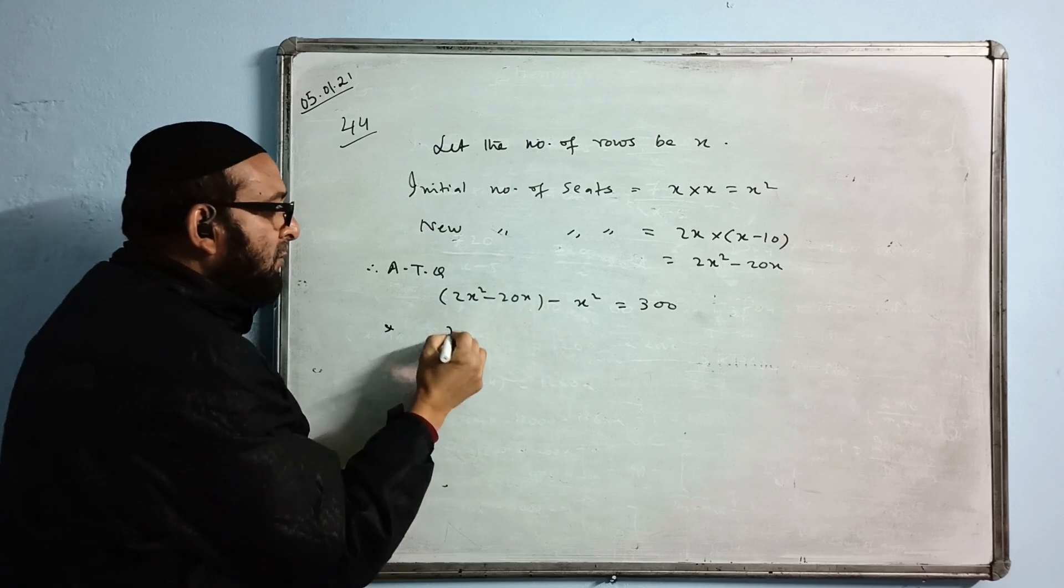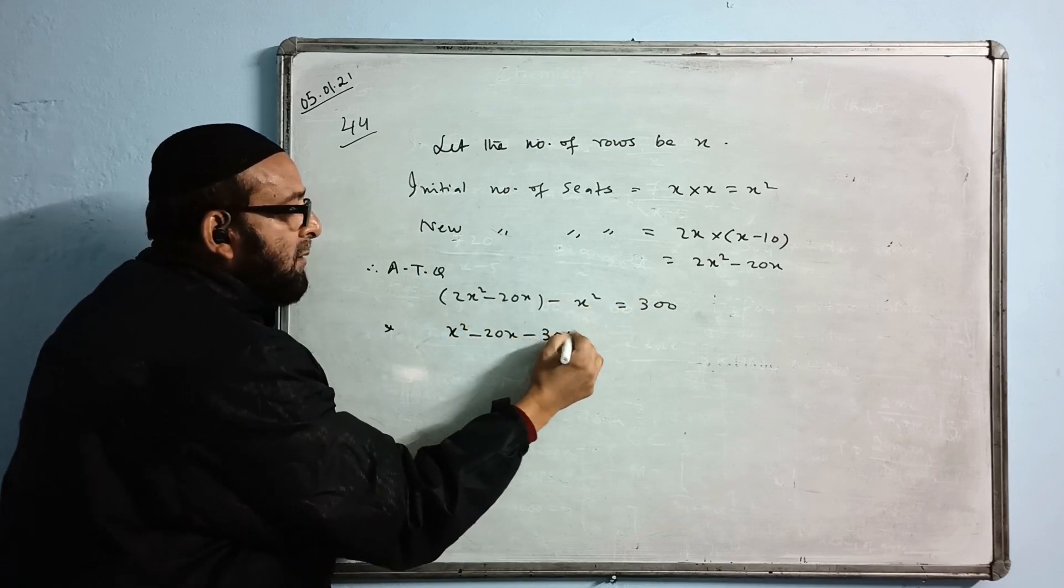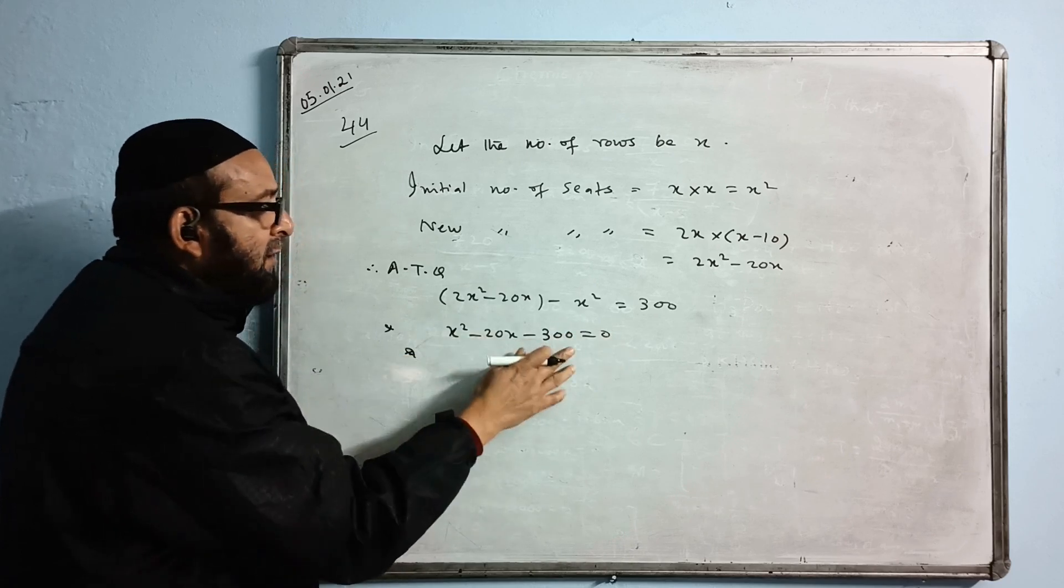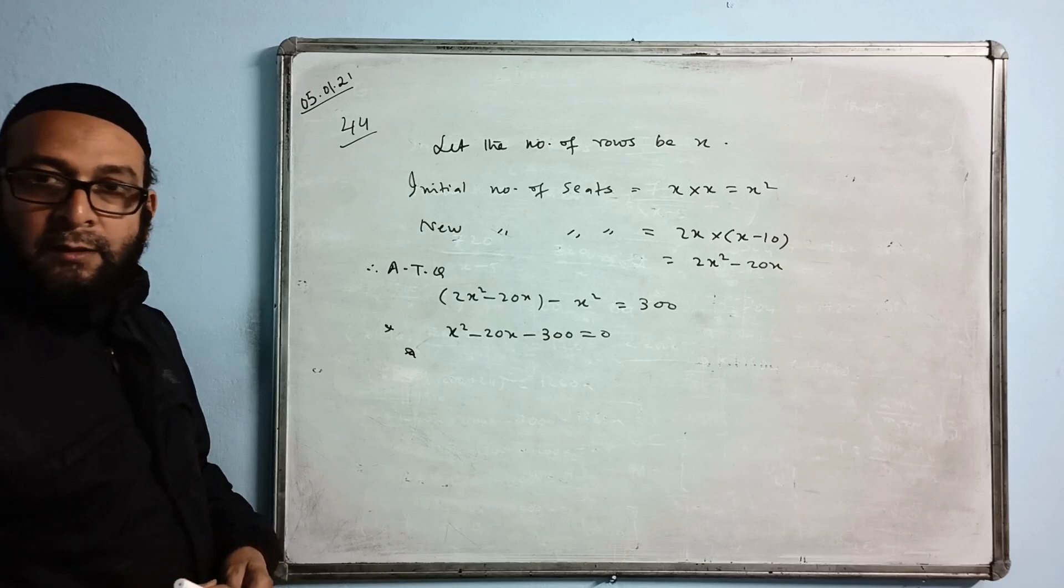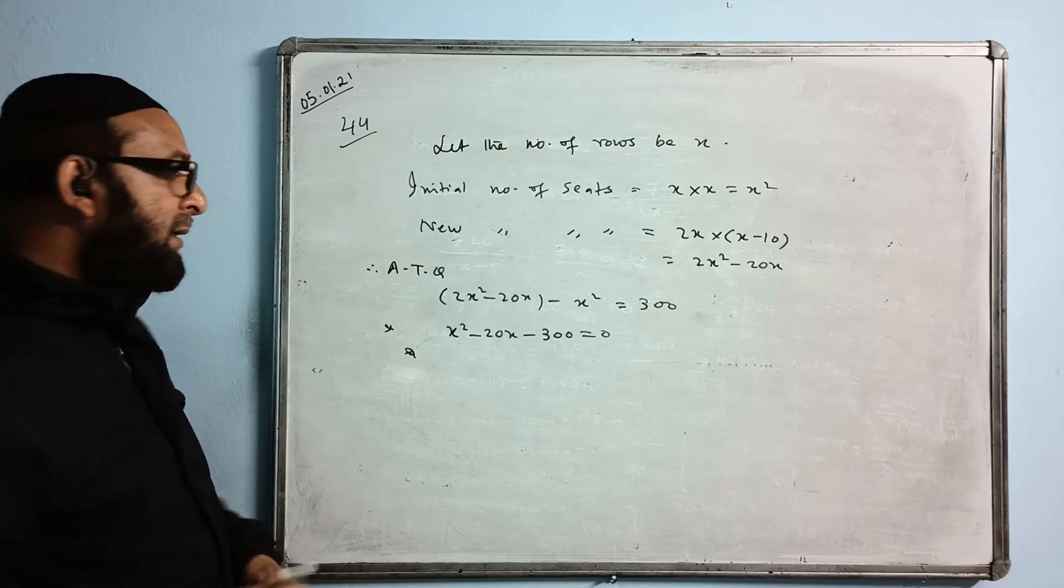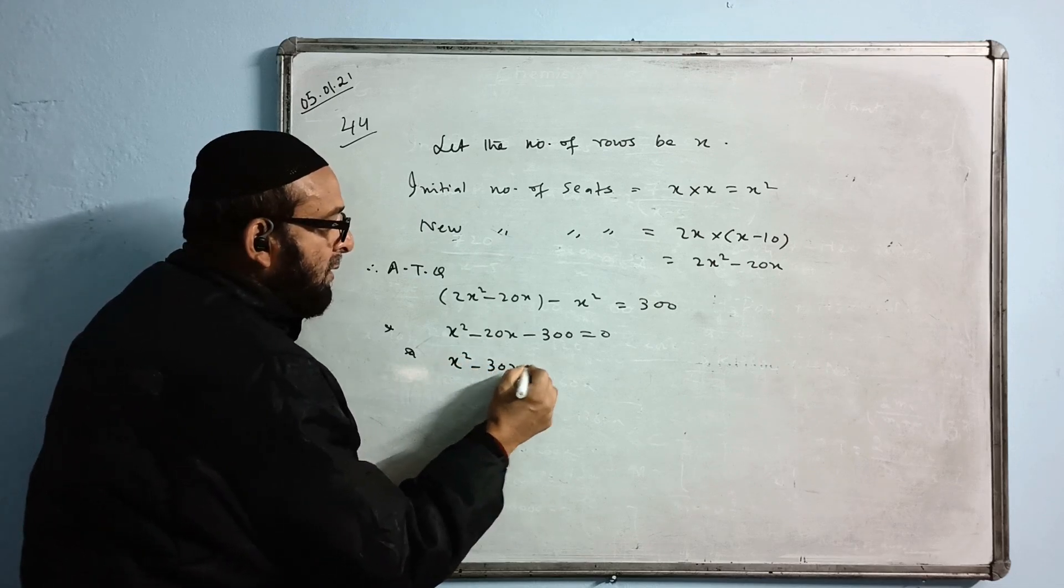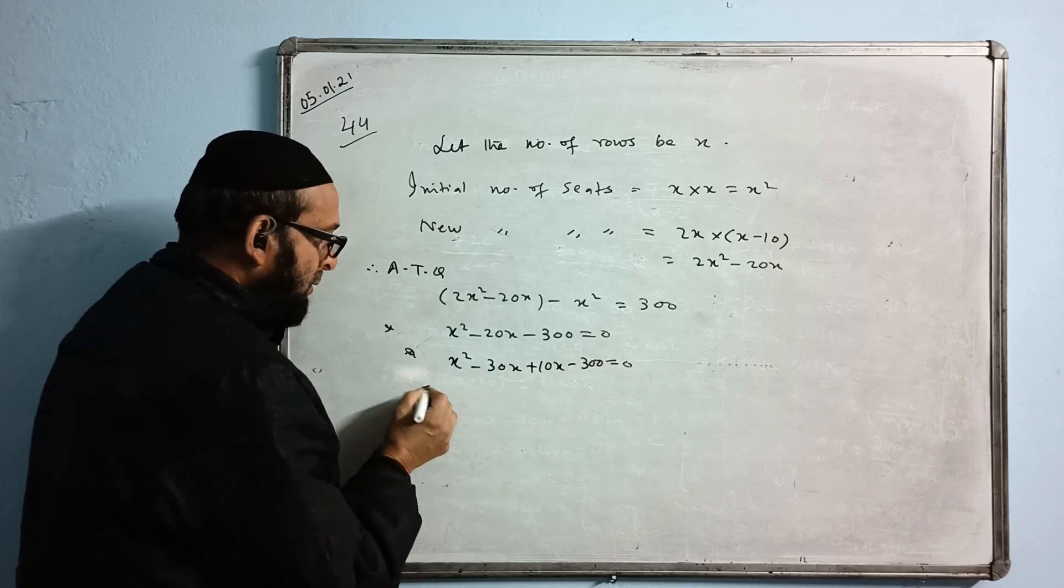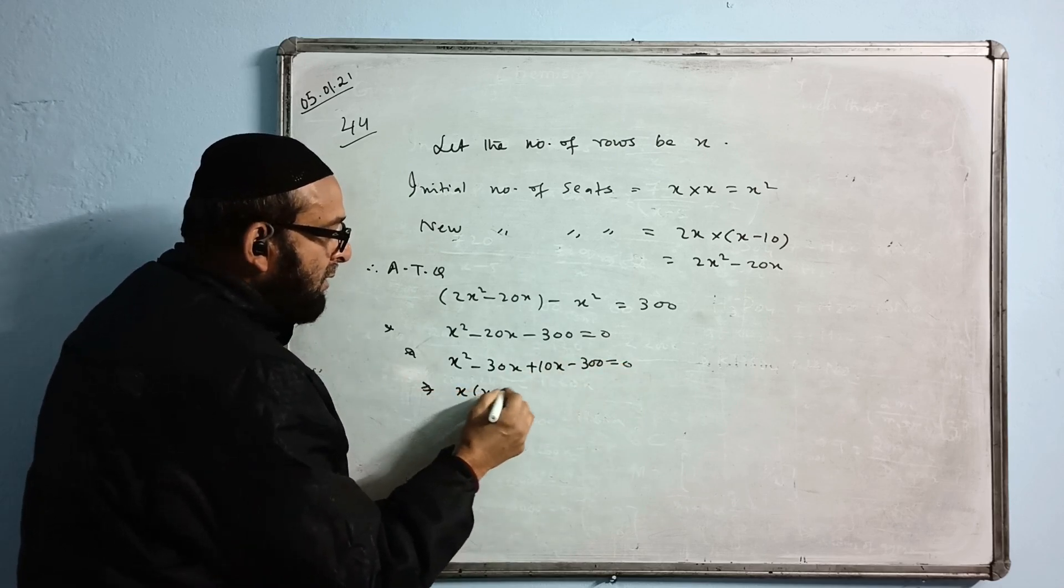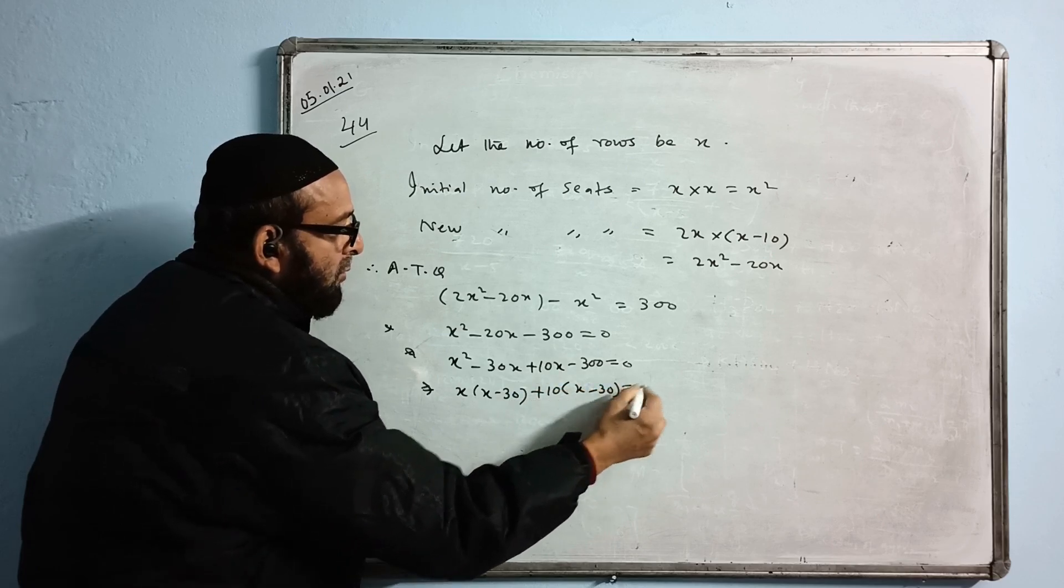2X squared minus X squared becomes X squared minus 20X. Bring 300 to get X squared minus 20X minus 300 equals 0. What do you get? 30 and 10. 30 times 10 is 300, and 30 minus 10 is 20. X squared minus 30X plus 10X minus 300 equals 0. X is common, you get X minus 30. Plus 10 is common, X minus 30.